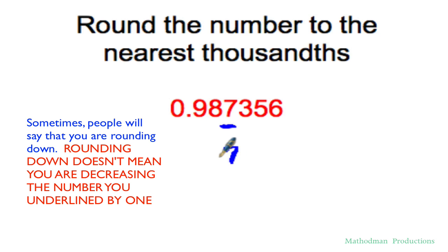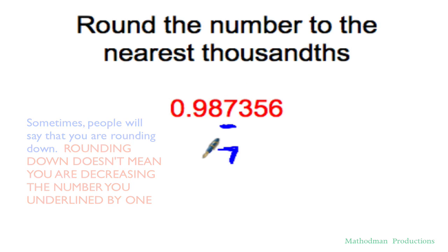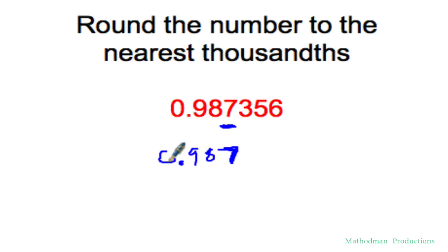Don't make that mistake of changing that 7 to a 6, because a lot of people when they hear 'round down' change that 7 to a 6. It just stays the same. 8 is just an 8, 9, 0, so it's just 0.987.